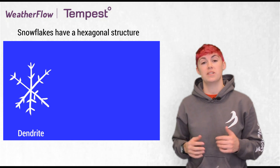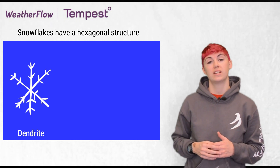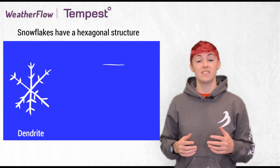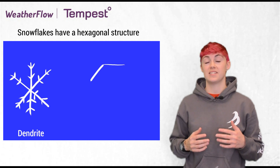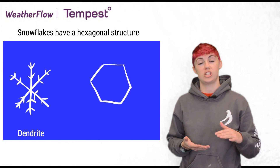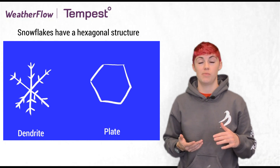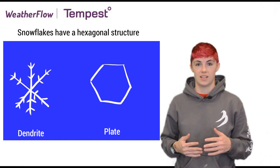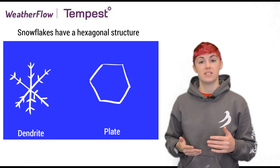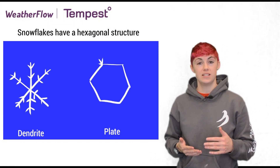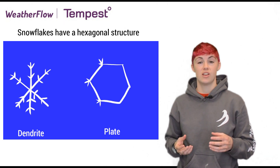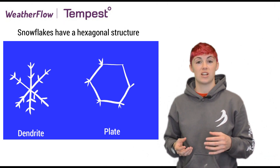Now, another common type of snowflake is the plate type. This type, in its simplest form, looks like a thin sheet in the shape of a hexagon. If there's enough water in the air, this thin plate can then start to grow branches on the edges of its vertices.